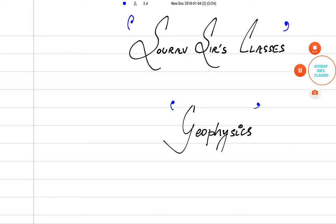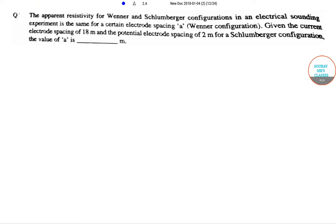Let us read the question with which we are going to start today's tutorial. The question reads: the apparent resistivity for Wenner and Schlumberger configuration in an electrical sounding experiment is actually the same for a certain electrode spacing.